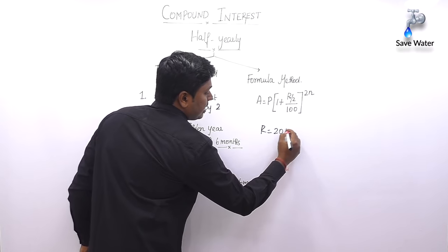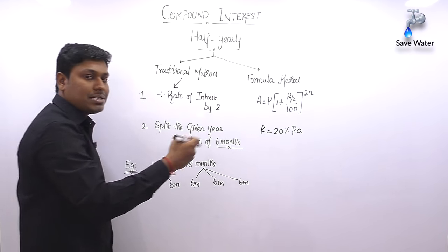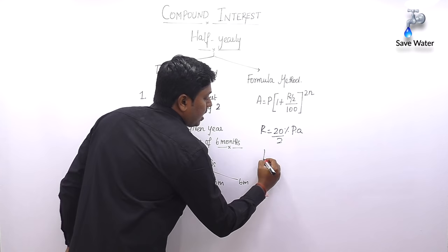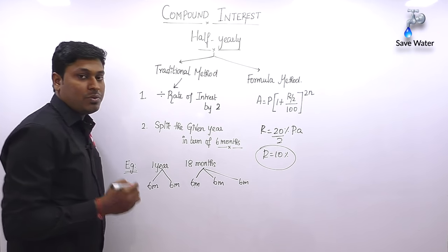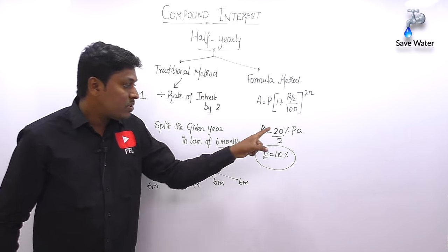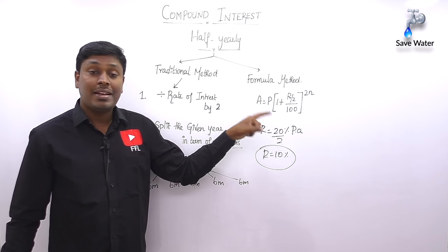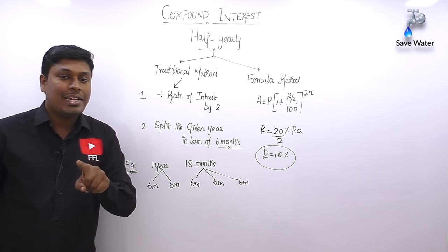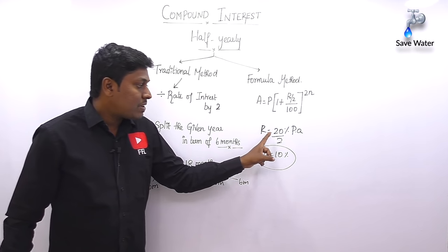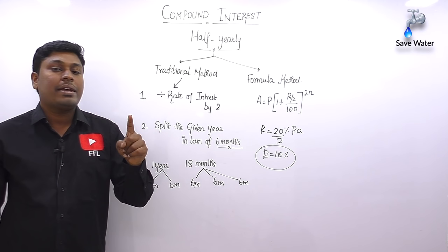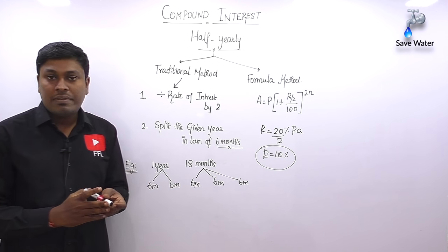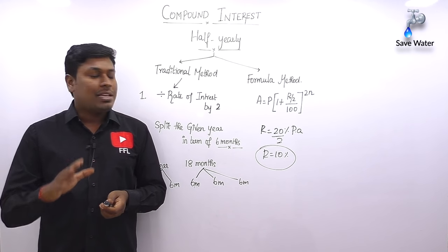Point one: split the given time in terms of six months, not nine months. Point two: the rate of interest in the question is given per annum — for example 20% per annum. For compound half-yearly, divide the rate by 2. So r = 10%. We divide by 2 because the rate is given for one year but we are finding interest for six months.